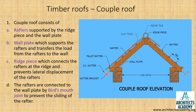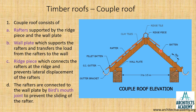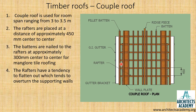The galvanized iron gutter is supported by gutter brackets spaced approximately 900mm apart. The GI gutter runs along the entire length of the roof. At the top of the roof, a special tile called the ridge tile covers the joint between the two slopes of the roof.